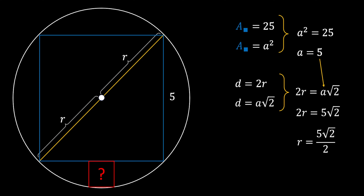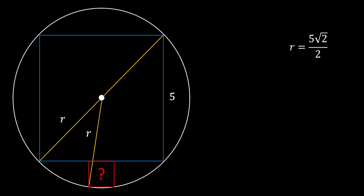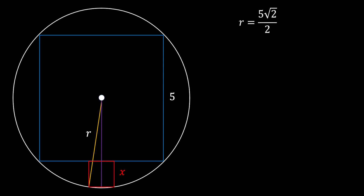Now let's draw another radius from the center of the circle to the intersection point between the bottom corner of our red square and the circumference of the circle. Let's clear the board a little and draw another line from the center of the circle to the bottom of our square.